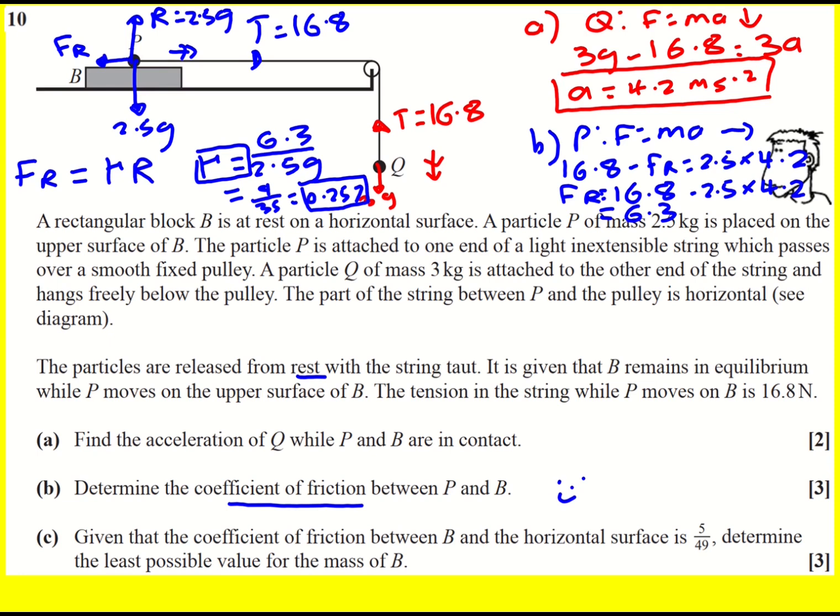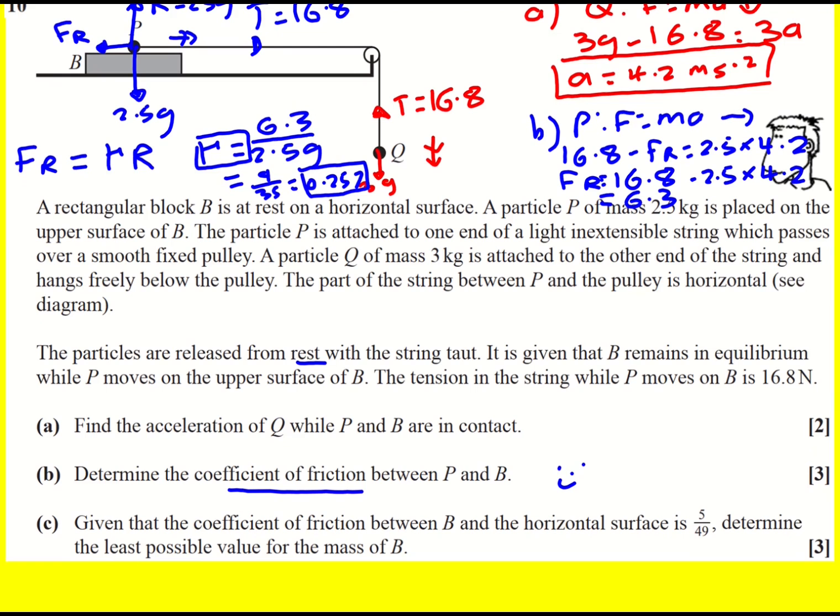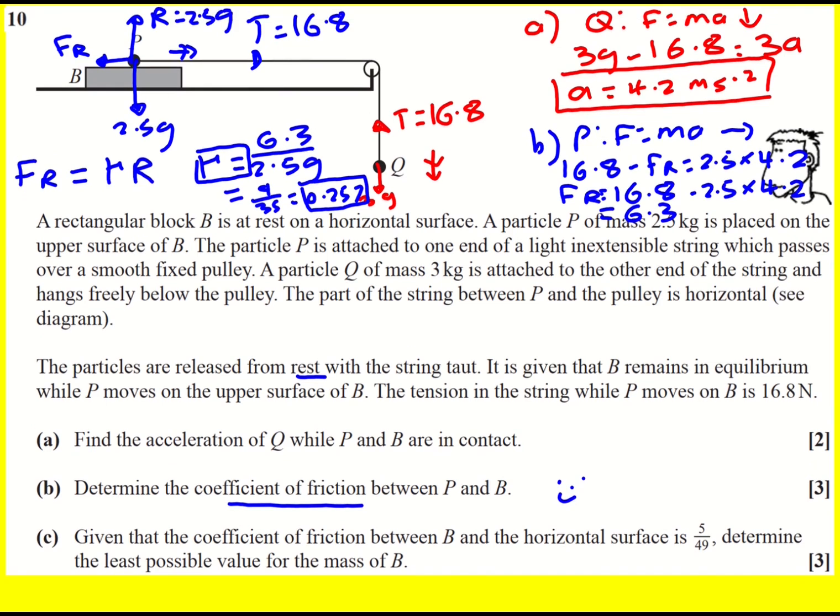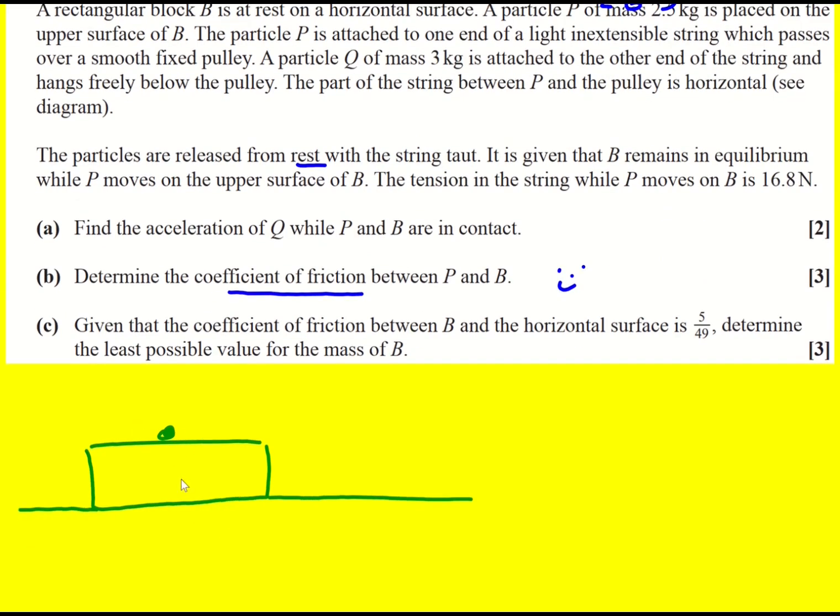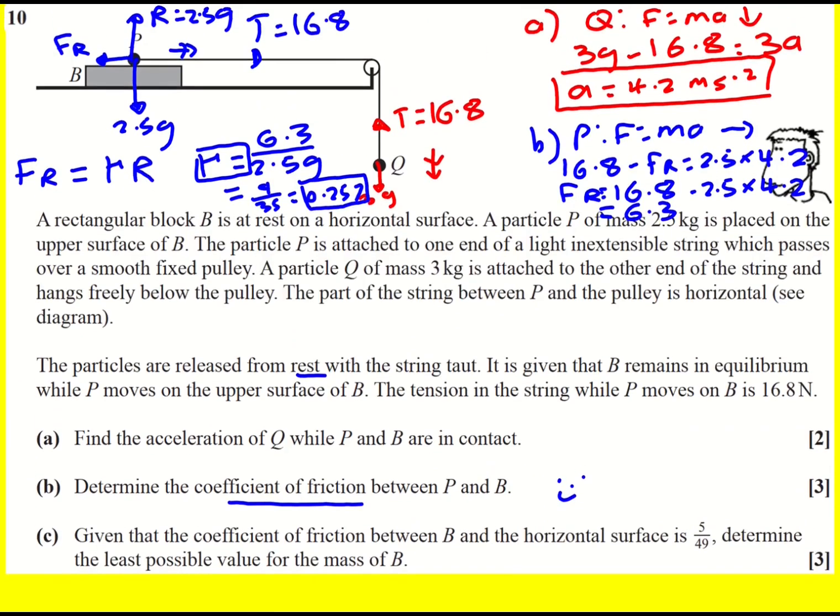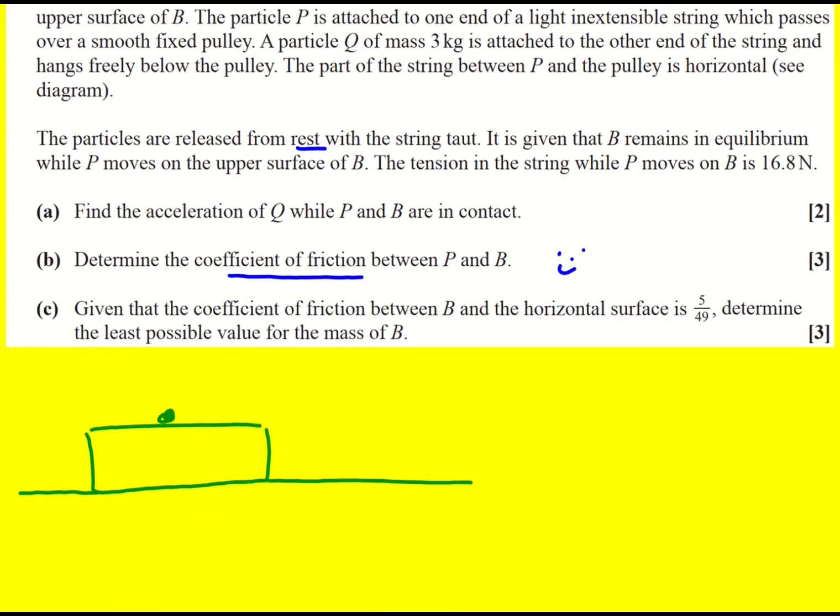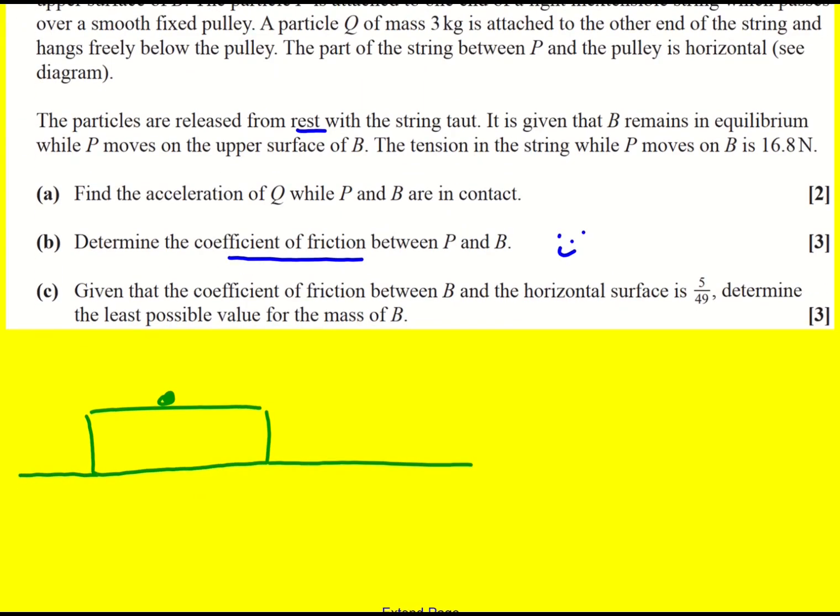All right here comes the part where we need to consider B very carefully because we have particles on particles and Newton's third law is going to come into play. So here's a diagram of B and I've drawn the table and P on top. So let's take a look at the forces on B. Now B is going to experience its weight and in fact we're trying to work out the mass. So the weight is going to be Mg. There's going to be a normal reaction from the table on B.